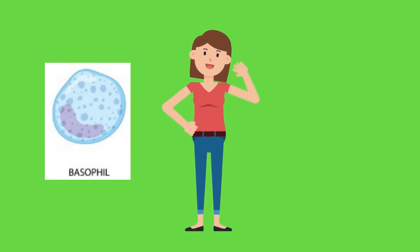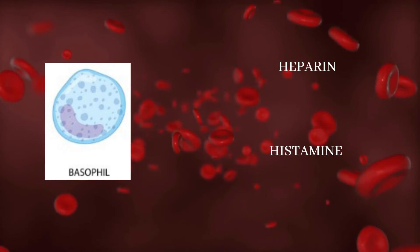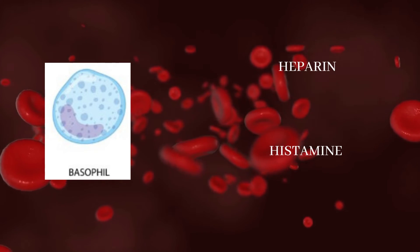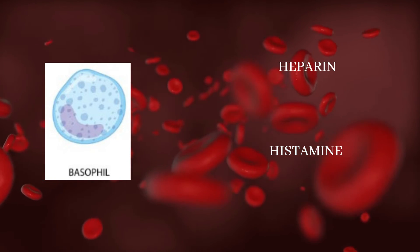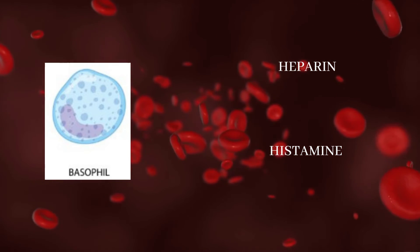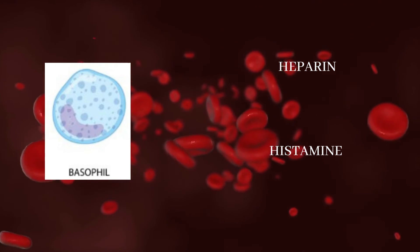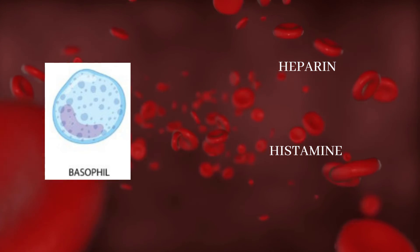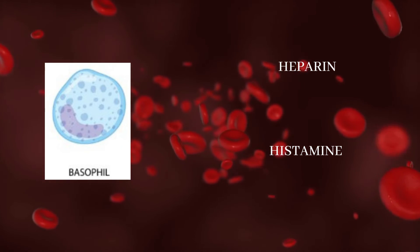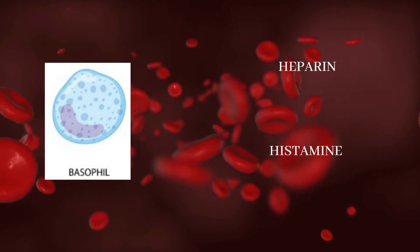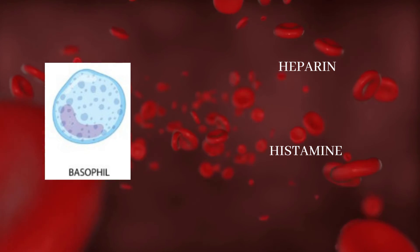Basophils produce a substance called heparin, which inhibits blood clotting. Whenever blood is present in blood vessels it cannot clot — for blood clotting, platelets play an important role, which I will discuss in the next lecture. The second substance that basophils produce is histamine, which participates in allergic reactions and in response to tissue damage and microbial invasion.